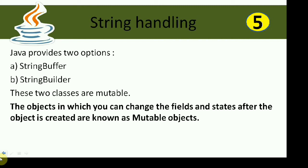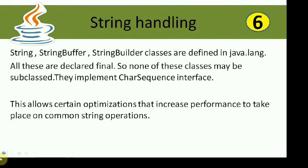Java provides two mutable class options apart from the immutable String class: StringBuffer and StringBuilder. These two mutable classes are also in the java.lang package. A mutable object is one in which you can change the fields and states after the object is created. String, StringBuffer, and StringBuilder are all defined in java.lang package and they implement the CharSequence interface.